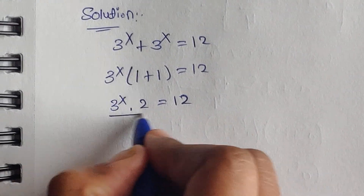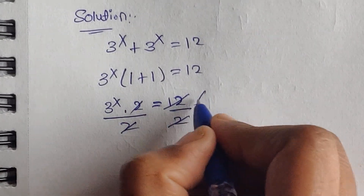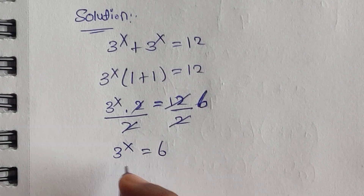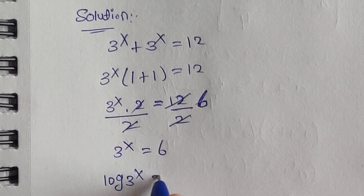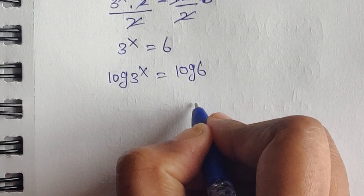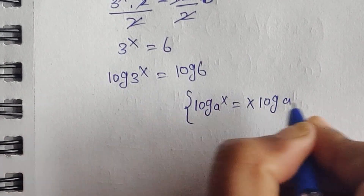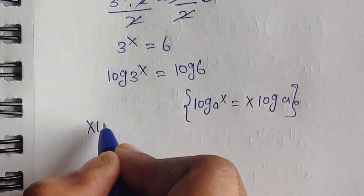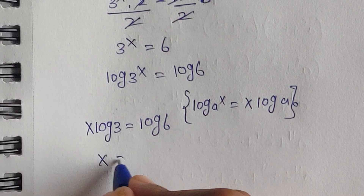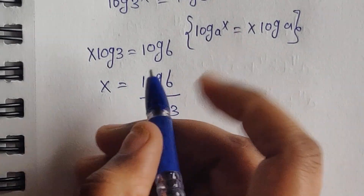Now we divide both sides by 2. The 2s cancel, and 12 divided by 2 equals 6, so 3 to the power of x equals 6. Now we apply log on both sides: log of 3 to the power of x equals log 6. Using the formula log(a^x) = x·log(a), we can write x·log 3 equals log 6. Therefore, x equals log 6 divided by log 3.